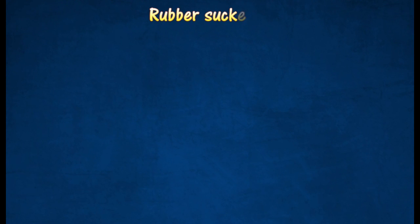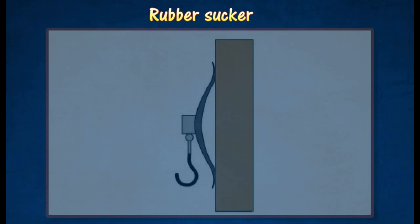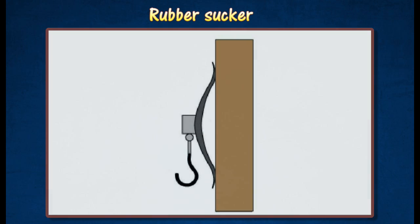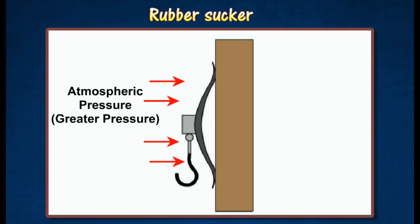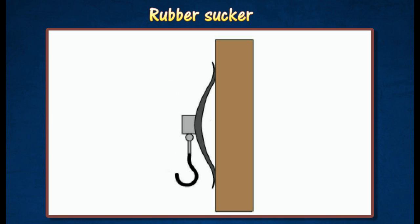A rubber sucker is a rubber cup that can be made to stick onto a smooth wall such as glass or a tiled wall. The rubber cup is made airtight by wetting its rim.